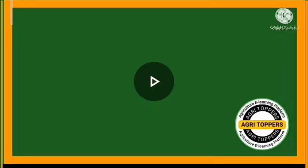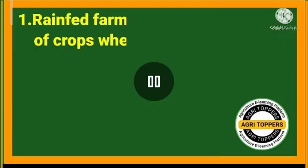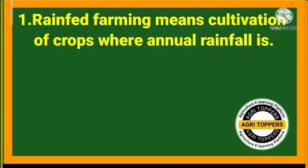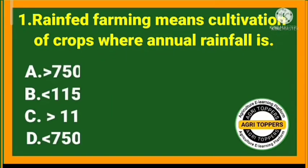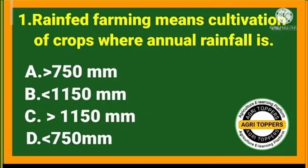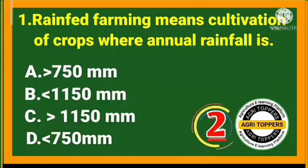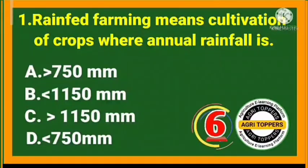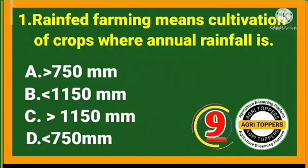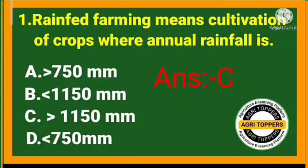Welcome friends to our YouTube channel. First question: rainfed farming means cultivation of crops where annual rainfall is greater than 1150 mm.